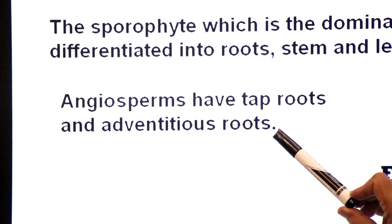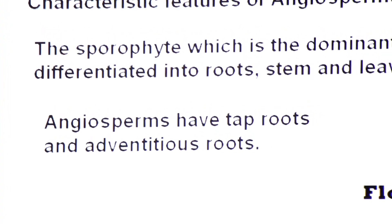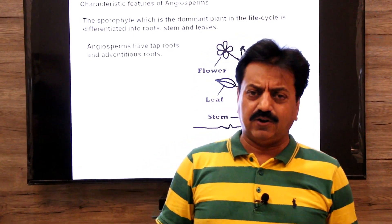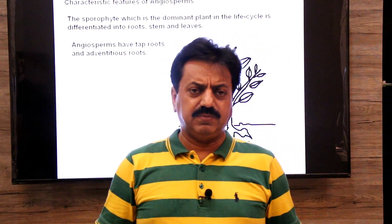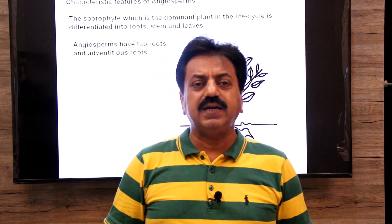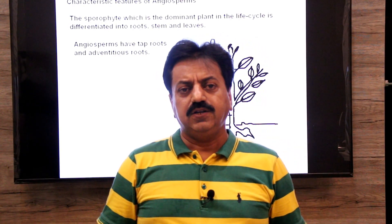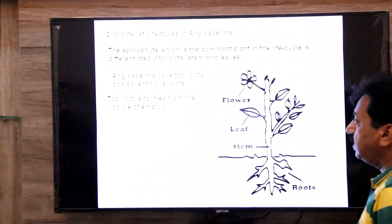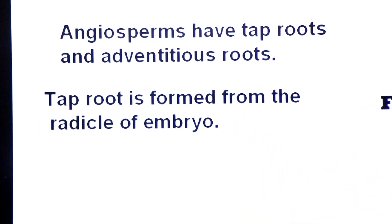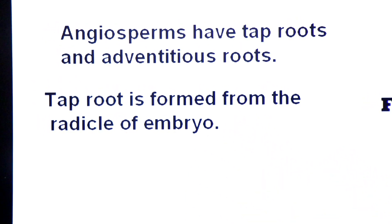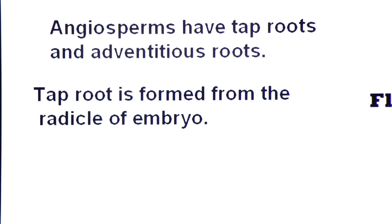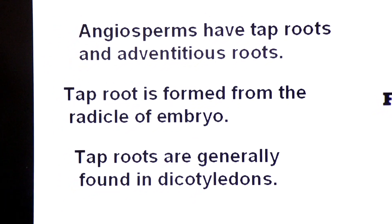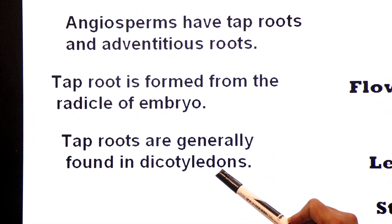Angiosperms have tap roots and adventitious roots. Angiosperms are of two groups: dicotyledons and monocotyledons. Dicotyledons generally have tap roots and monocotyledons usually have adventitious roots. The tap root is formed from the radicle of the embryo. Tap roots are generally found in dicotyledons.